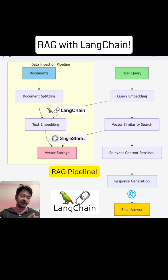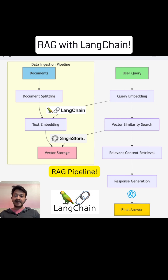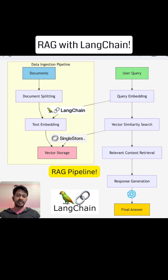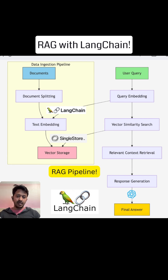Now you have the query and the relevant context. The top document chunks are retrieved from the vector database using vector search, similarity search, or semantic search. Then response generation happens at the end using an LLM model — in our tutorial today we are using an OpenAI LLM model. That's basically what RAG is all about: finding contextually relevant responses by going through your own custom documents, rather than letting LLMs hallucinate by attaching our own custom data.